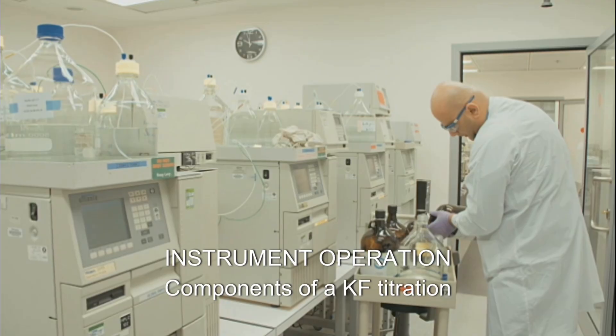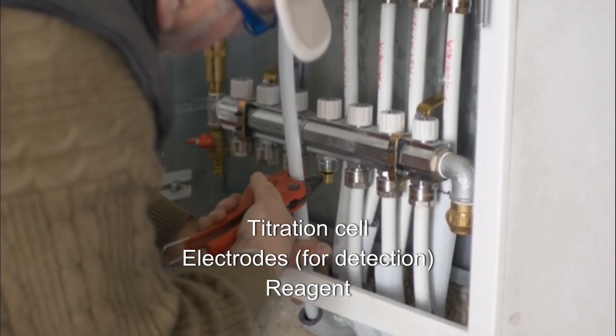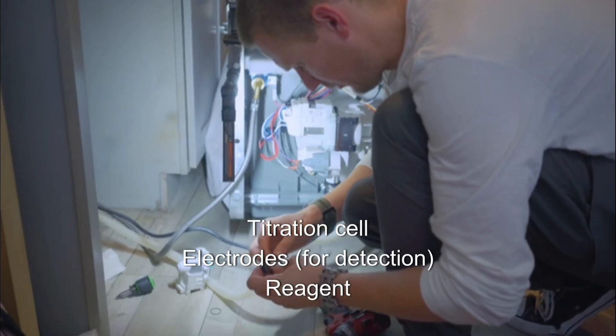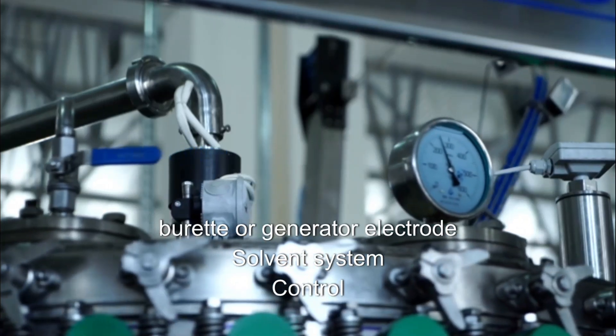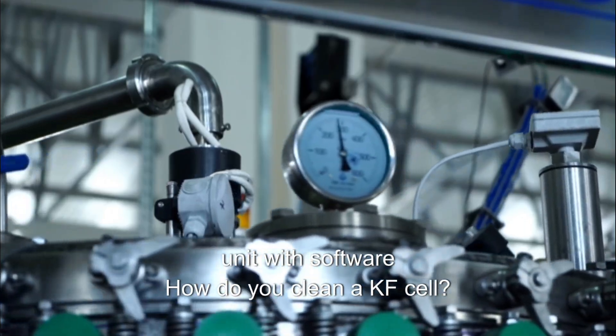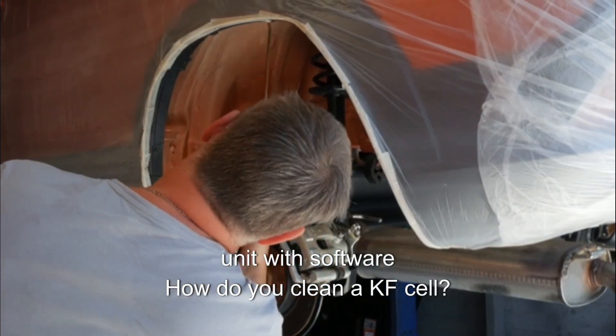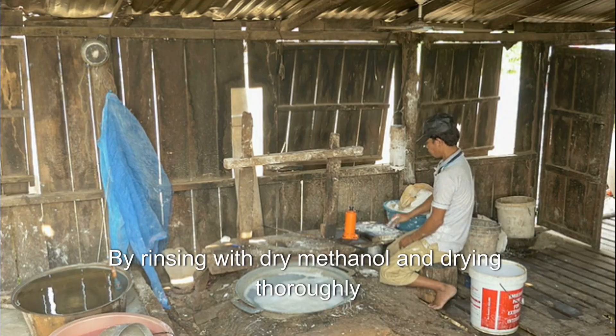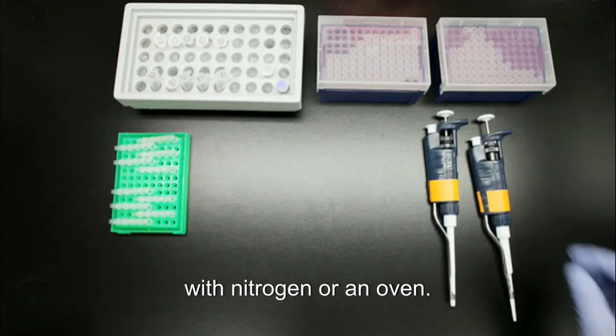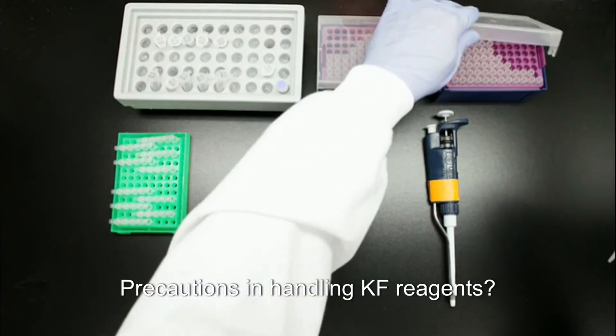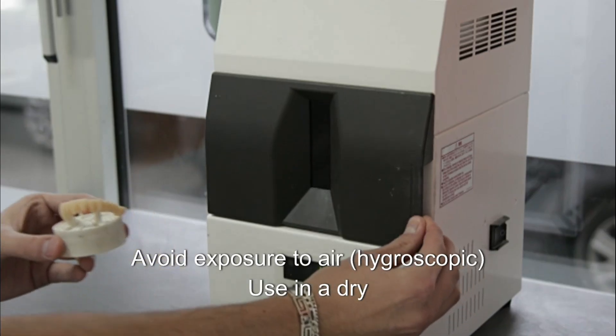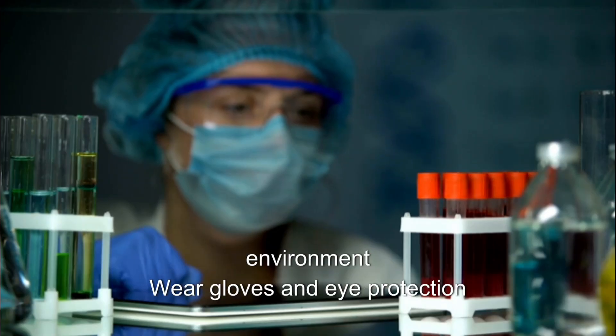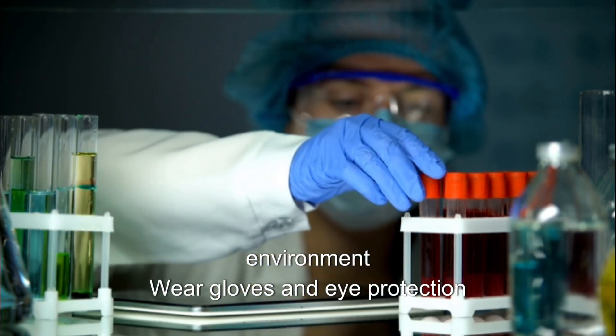Components of a KF titration system: titration cell, electrodes for detection, reagent burette or generator electrode, solvent system, control unit with software. How do you clean a KF cell? By rinsing with dry methanol and drying thoroughly with nitrogen or an oven. Precautions in handling KF reagents: avoid exposure to air, hygroscopic, use in a dry environment, wear gloves and eye protection.